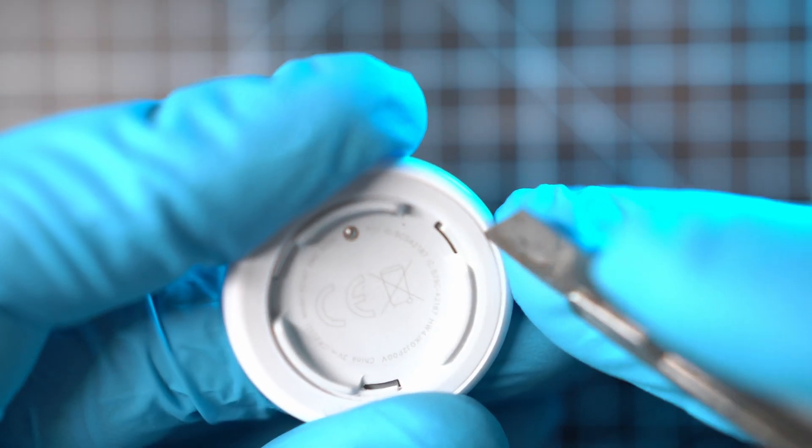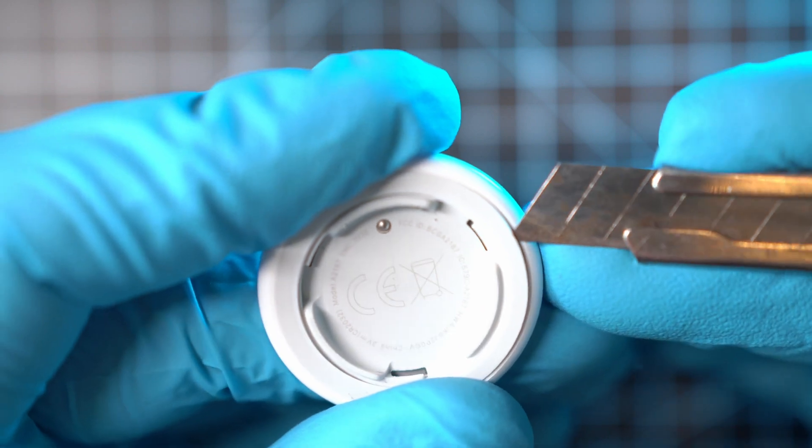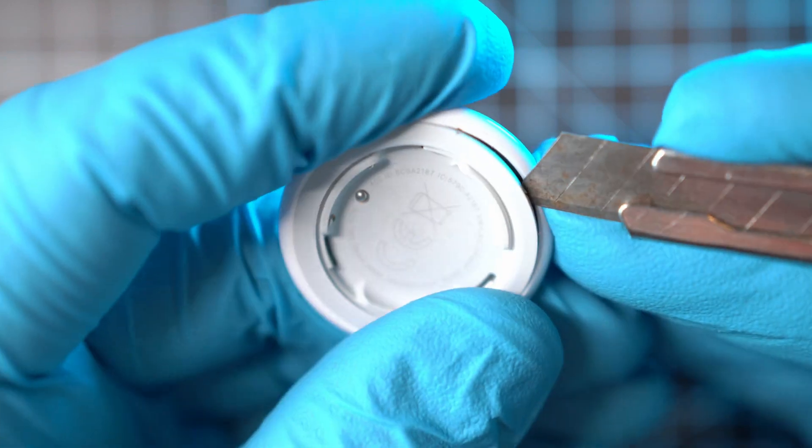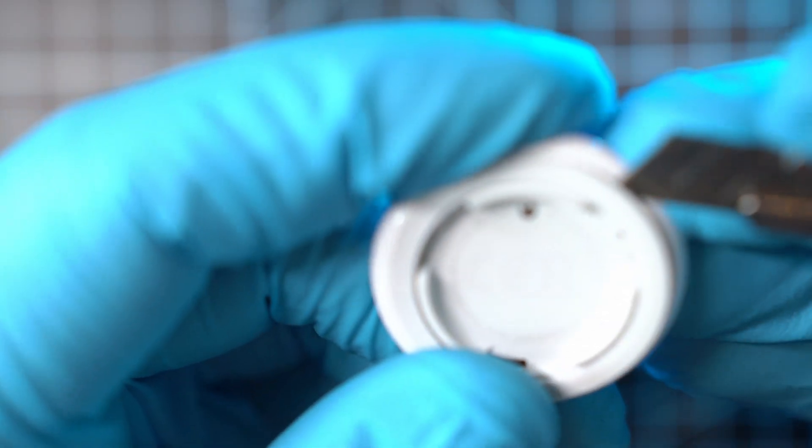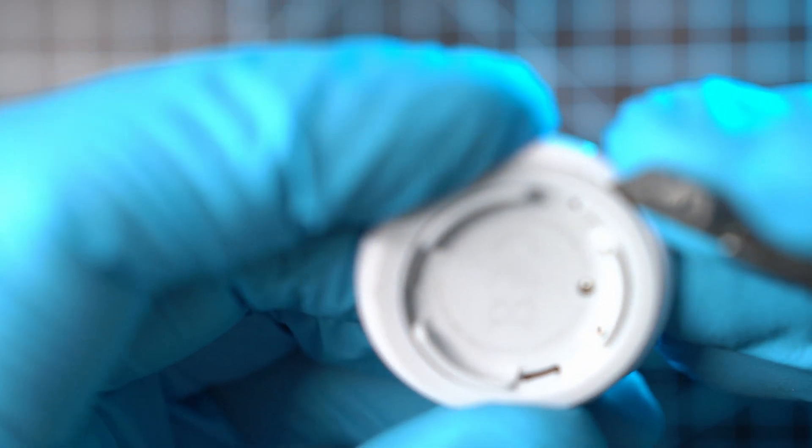Slide something thin between the grey and white plastic and pry the grey plastic up. You might hear a few clicks. Make sure to subscribe or else your AirTag will turn rusty.